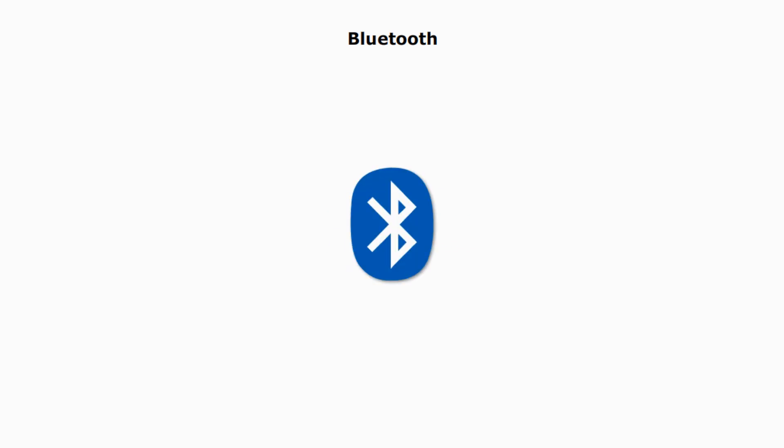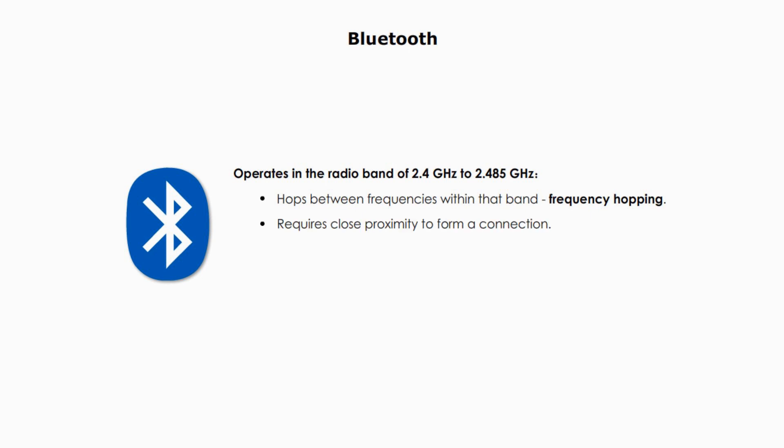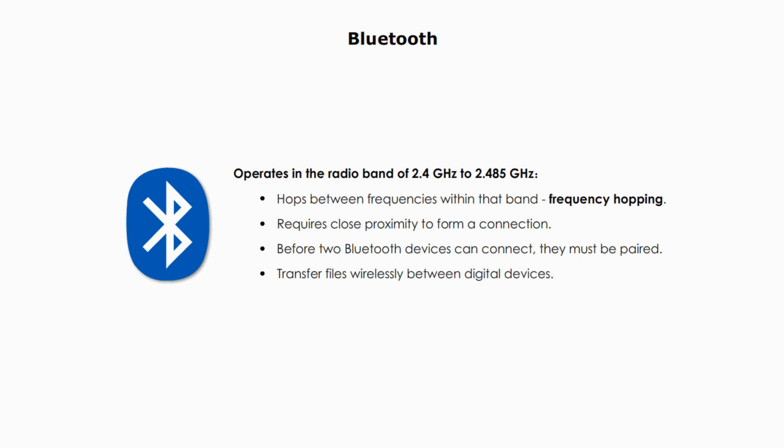What is Bluetooth? Bluetooth operates in a radio band of 2.4 GHz to 2.485 GHz. It hops between frequencies within that band, and this is called frequency hopping. Bluetooth requires devices to be close by to form a connection, and they must be paired before the two Bluetooth devices can connect. Once they are connected, Bluetooth transfers files wirelessly.